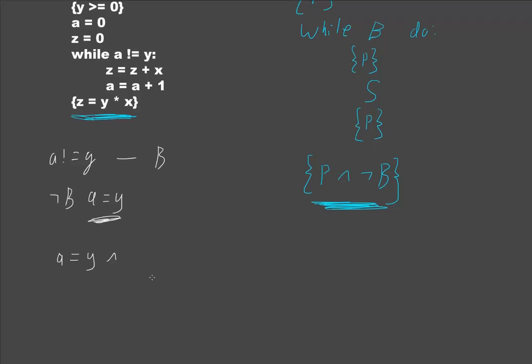Well, to find out what helps us, we need to know what we're trying to get, and what we're trying to get is here, z is equal to y times x. So, the question is, what information are we missing? Obviously, we can't prove that z is equal to y times x, just because we know that a equals y, what extra information would we need to prove this?